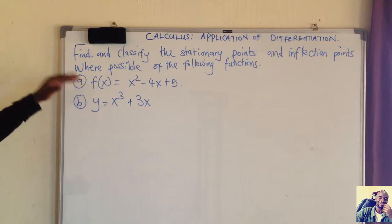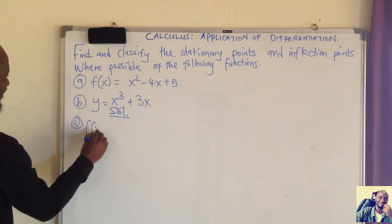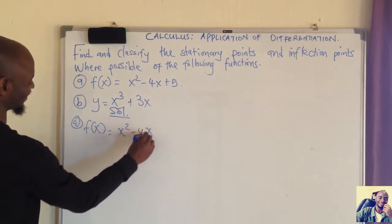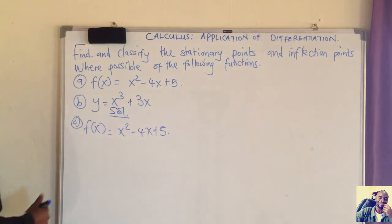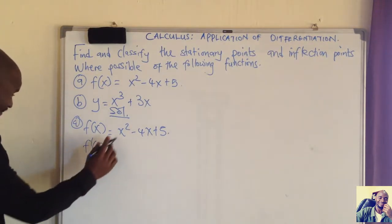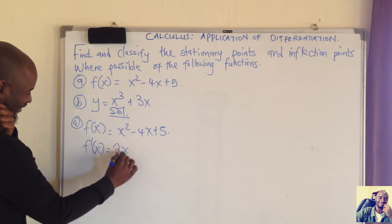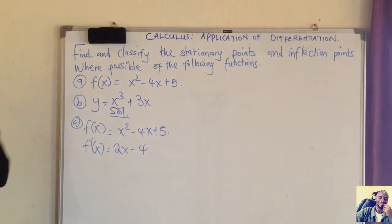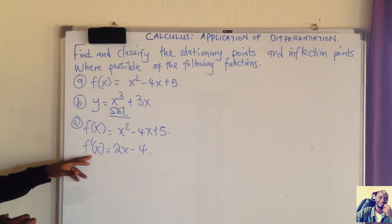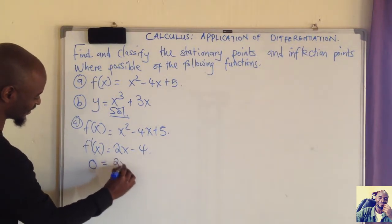The first thing you have to do is find the gradient function and equate it to zero. In question (a), we have the function f(x) = x² − 4x + 5. We differentiate to find the gradient function: f'(x) = 2x − 4. At the critical points or stationary points, the gradient function is equal to zero, so we set 0 = 2x − 4.